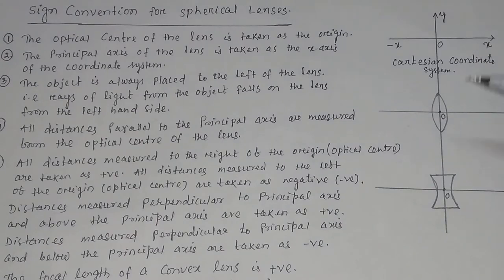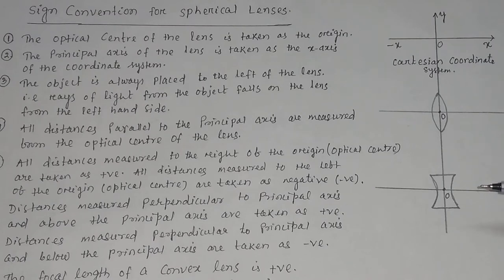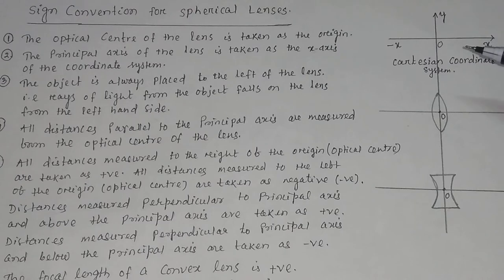The principal axis is taken as the x-axis. This is also the principal axis for the concave lens, and this is the x-axis of the coordinate system.